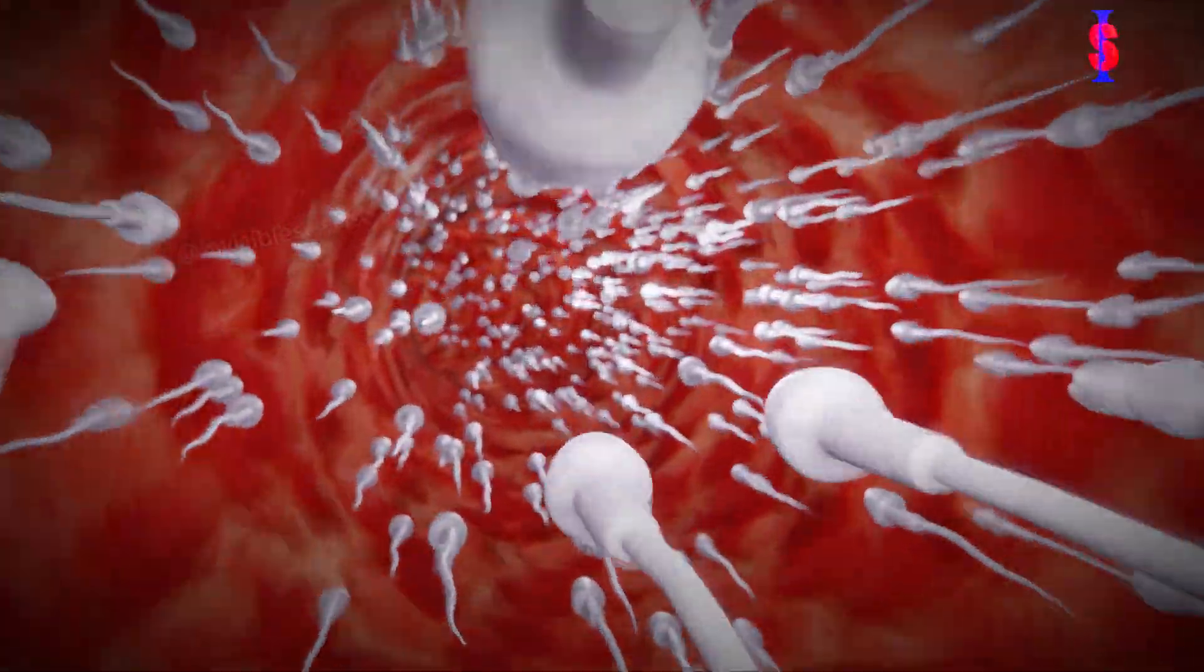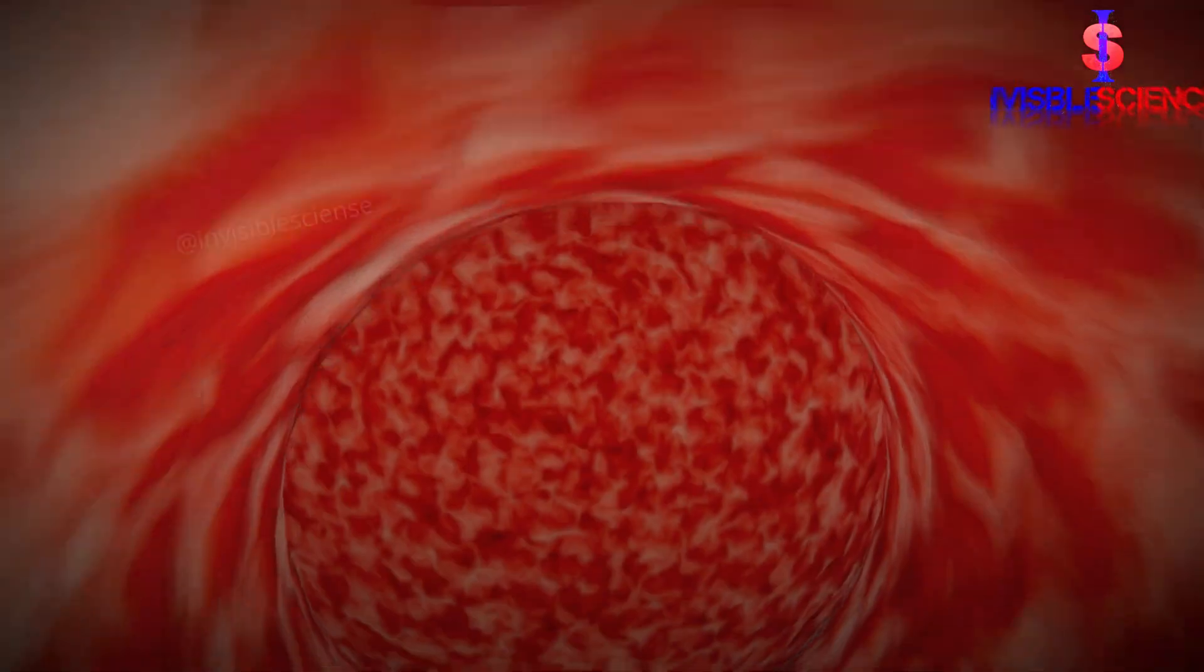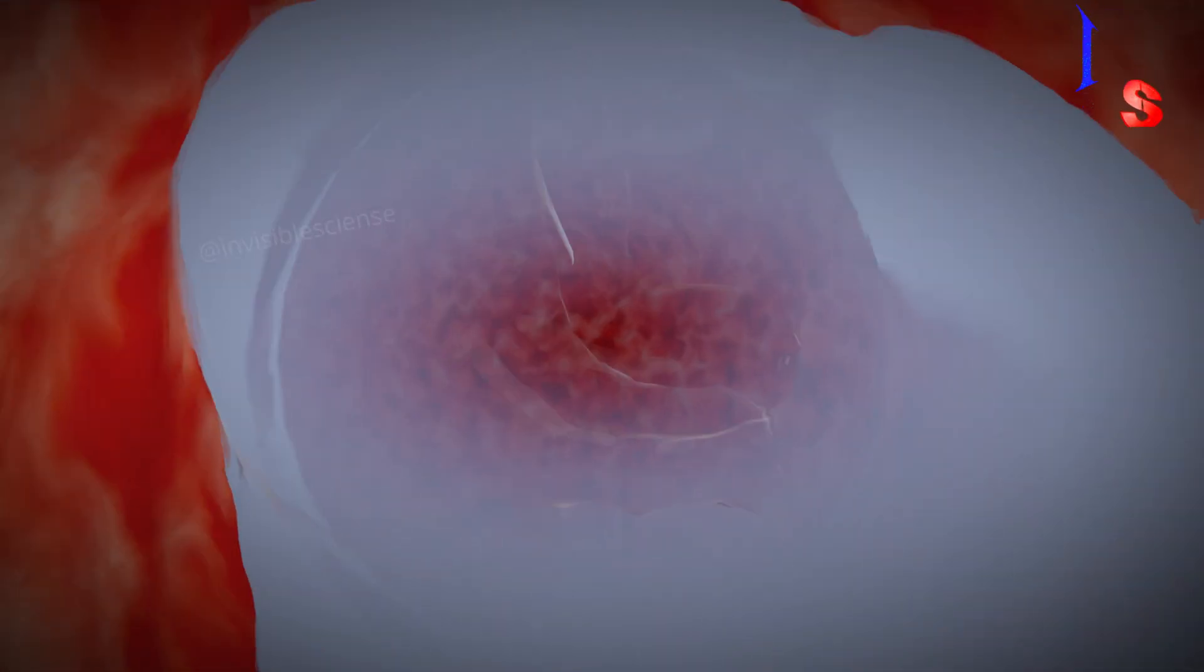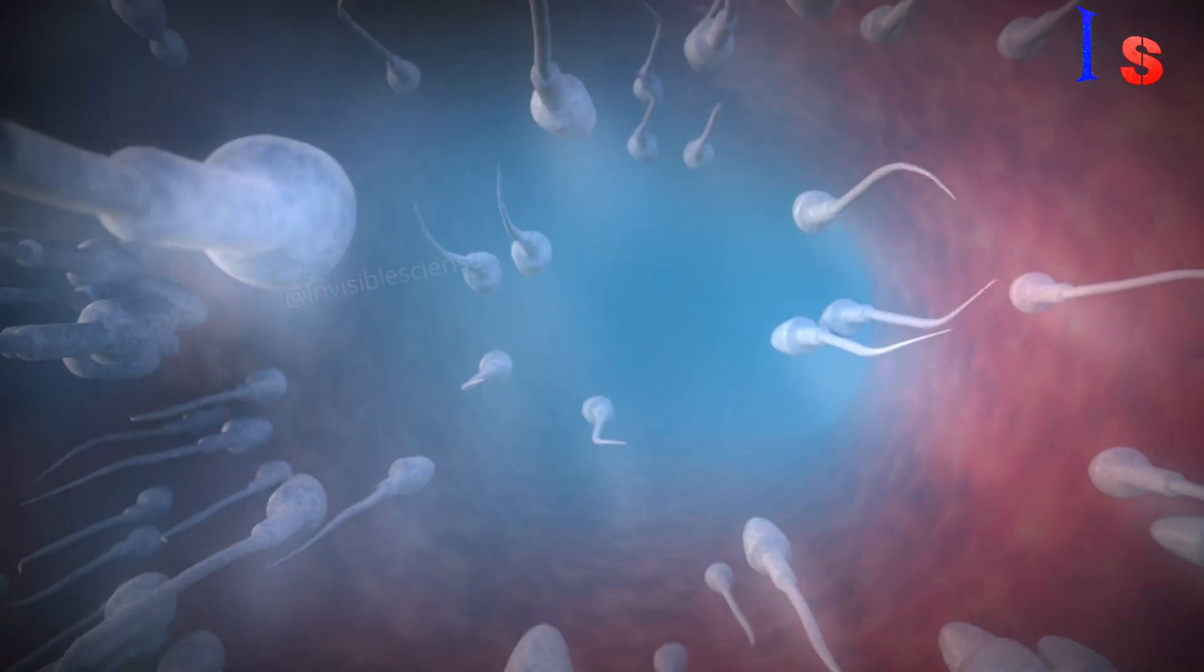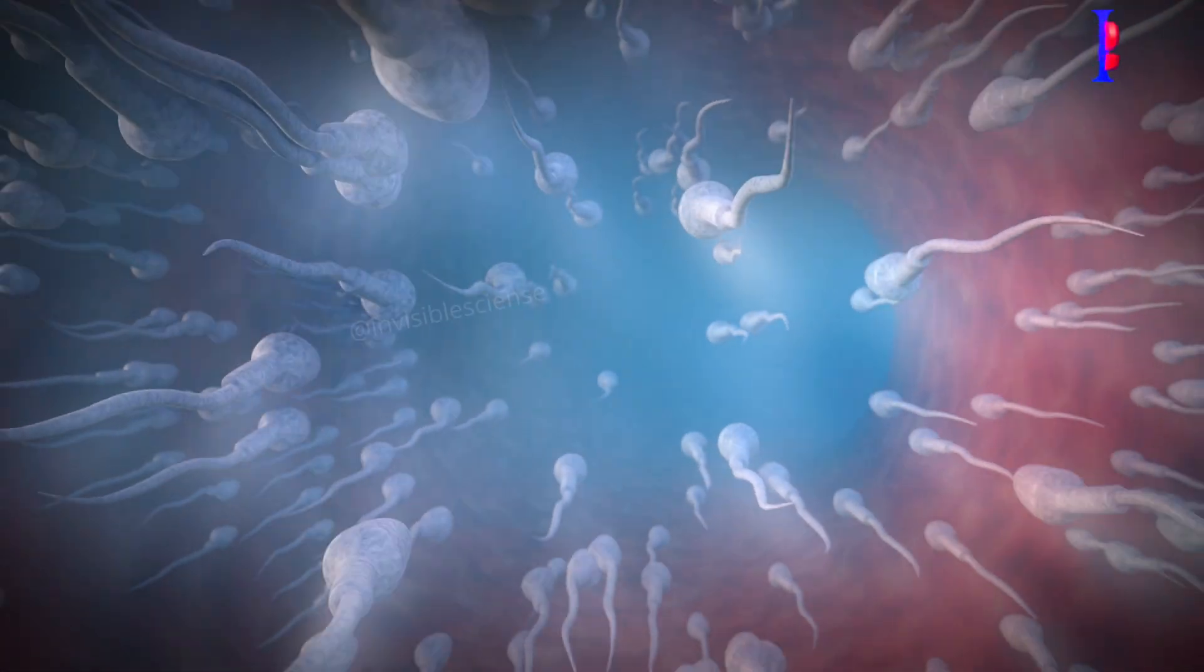As the sperm cells move through the vas deferens, they mix with fluid from the prostate gland and seminal vesicles. These fluids provide the sperm cells with the nutrients and energy they need to reach their destination.